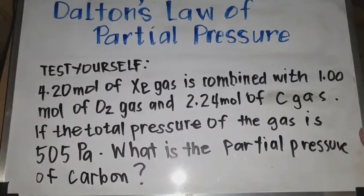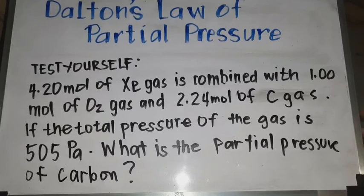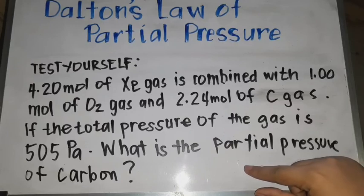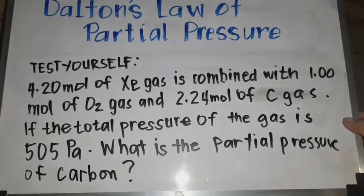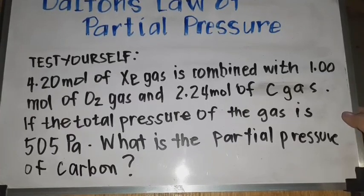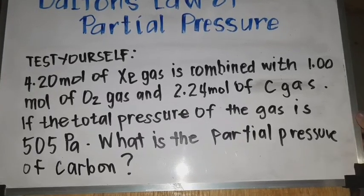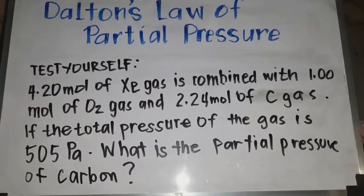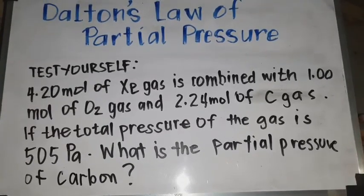To test your understanding of Dalton's law of partial pressure, try this problem: 4.20 moles of xenon gas is combined with 1 mole of oxygen gas and 2.24 moles of carbon gas. If the total pressure is 505 pascal, what is the partial pressure of carbon? Please comment your answer below. Bye!